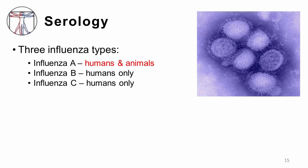Influenza B infects humans only, and while it is capable of causing influenza epidemics, it does not cause large-scale pandemics. Influenza C also infects humans only, but it causes only mild respiratory tract infections, and is not responsible for large outbreaks of influenza.